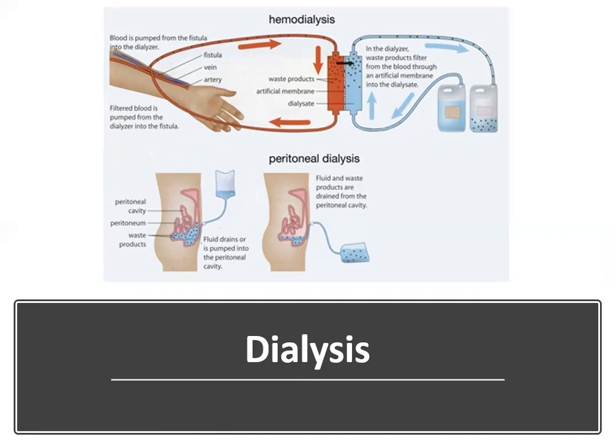On page 653, we have end-stage renal disease dialysis services. These codes are organized based upon whether the service was provided monthly with a certain number of visits, and also by patient age. Code 90951 is for under two years of age, subdivided by number of visits during that monthly service. Code 90954 covers age 2 to 11; 90957 covers age 12 to 19; and on page 654, code 90960 covers patients age 20 and over. These monthly dialysis code families are divided based on number of visits.